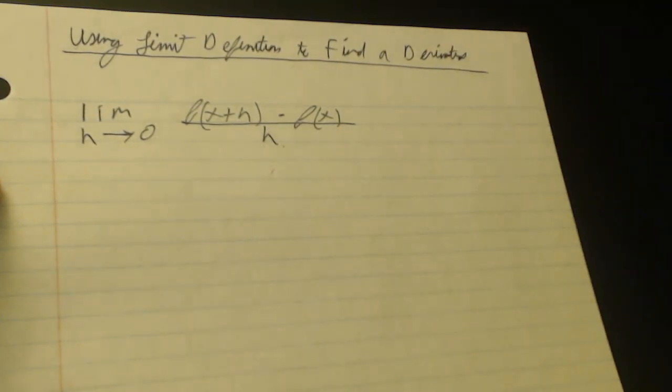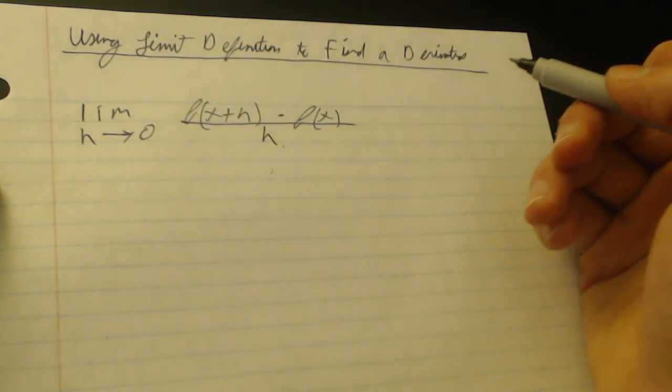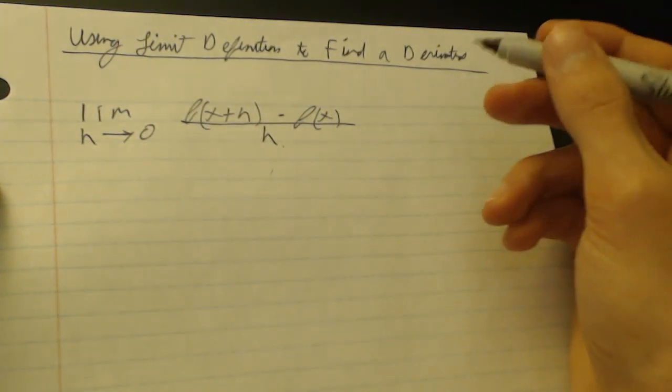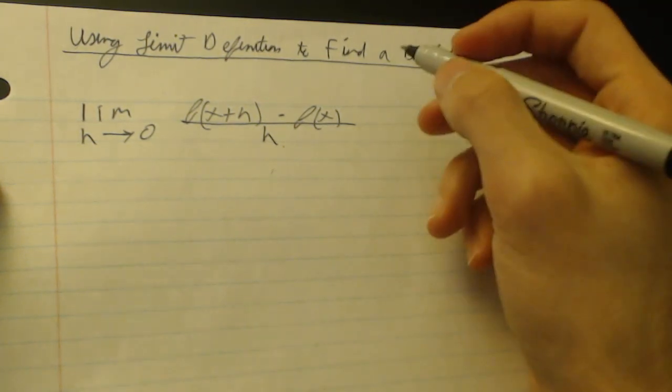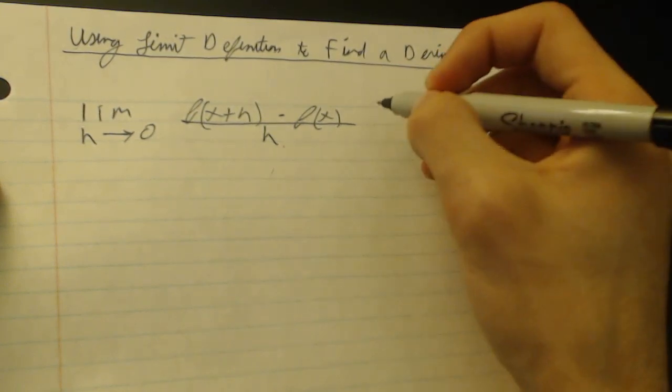The limit as h approaches 0 of f of x plus h minus f of x all over h. Now, you should already be familiar with this if you're just looking this up as review, or maybe you just want to learn some calculus from scratch. But it doesn't matter. I'm just going to do a few problems step by step so you can see how to do it.